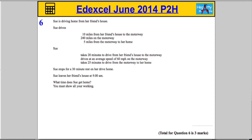What I'm going to suggest here is to get an idea of what's going on, we're going to draw a bit of a picture of what's happening. She's 10 miles from her friend's house to the motorway, so we're going to break the journey up into parts. This is from the friend's house — we'll call it F, the friend's house.